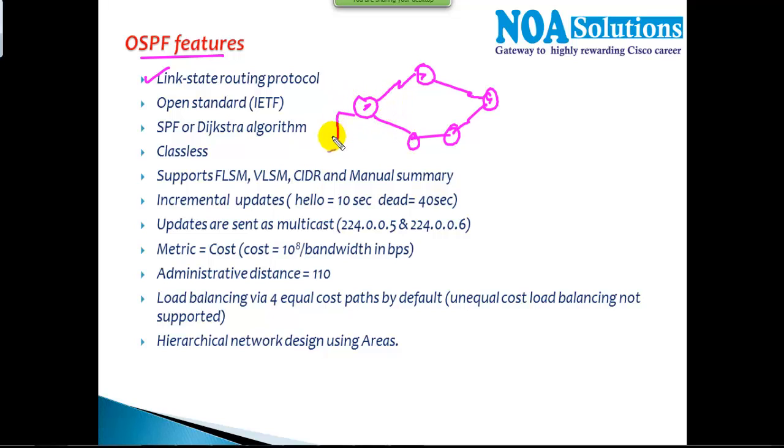Let's say I got a router one, and from router one to reach router five, I got multiple routes. It's going to maintain the information of each and every possible route to reach that particular destination. That's what we call link state behavior, and OSPF is capable of doing that.